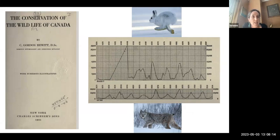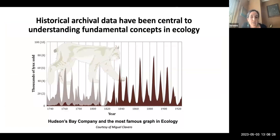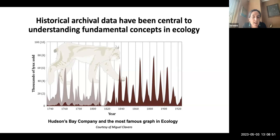These data were further explored by ecologists in the 1920s, 30s, and 40s. We now have information going back to the 1740s, documenting cyclical patterns in the numbers of animals that were traded, and this was accepted as a proxy of abundance by ecologists over this long time period. These historical archival data have been central to understanding fundamental concepts in ecology for about a century.